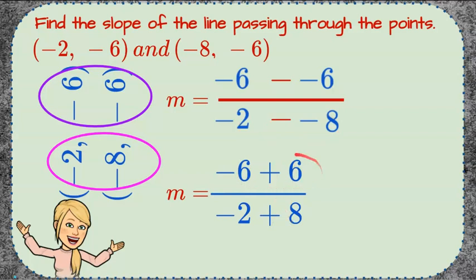Now we can add negative 6 plus 6. Those are opposites and equal 0. Negative 2 plus 8 is positive 6. 0 divided by any value is 0. So the slope of this line is 0.